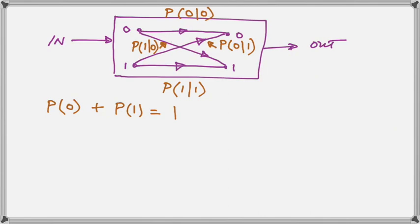So now we begin to analyze our binary symmetric channel and those are the four possible outcomes. We put in a 1, we get a 1, we put in a 0, we get a 0 or we get the crossover in either direction.